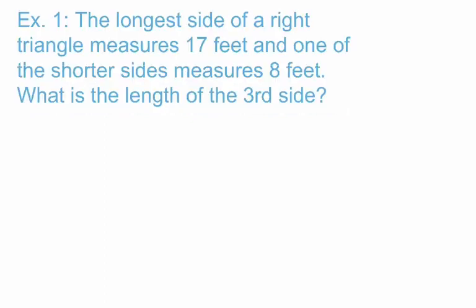For our first example, we have more of a word problem. It says the longest side of a right triangle measures 17 feet, and one of the shortest sides measures 8 feet. What is the length of the third side? Since we don't have a picture or diagram, we need to draw a right triangle. The key piece of information is that the longest side is 17 feet — and the hypotenuse is the longest side of a right triangle — so the hypotenuse is 17 feet and one leg is 8 feet.